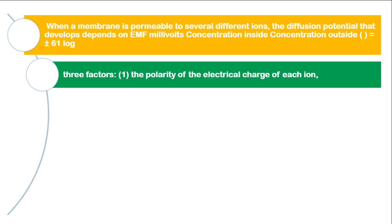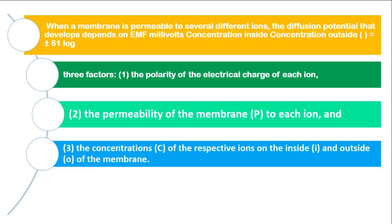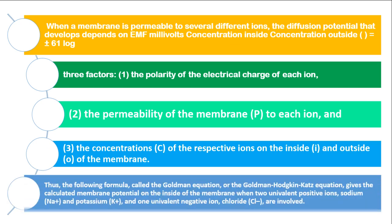We have three factors: the polarity of the electrical charge of each ion, the permeability of the membrane to each ion, and the concentration of the respective ions on the inside and outside of the membrane affecting this electromotive force.